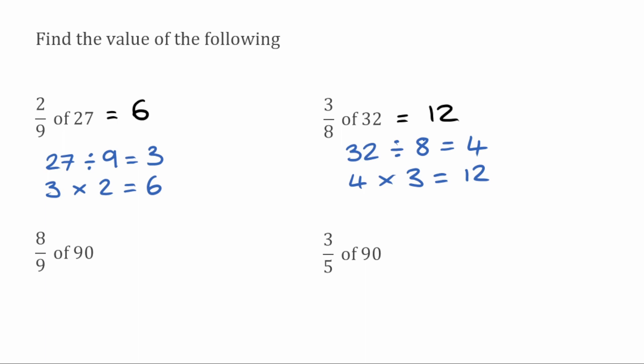So for this next question we have 8 ninths of 90. So we're going to take our 90 and divide by the denominator, so divide it by 9. That's going to leave us with 10. We then take our 10 and multiply by the numerator which is 8. So 10 multiplied by 8 would give us 80. So our answer to this would be 80.